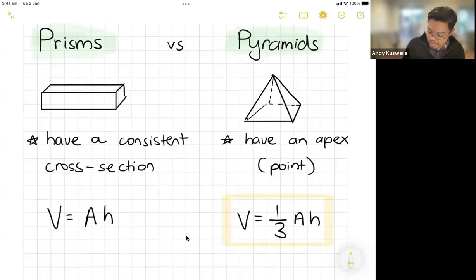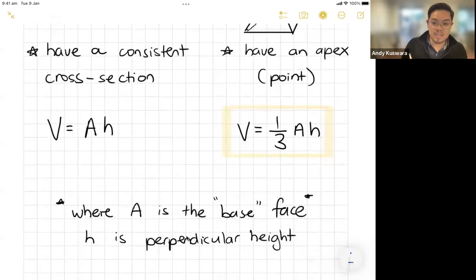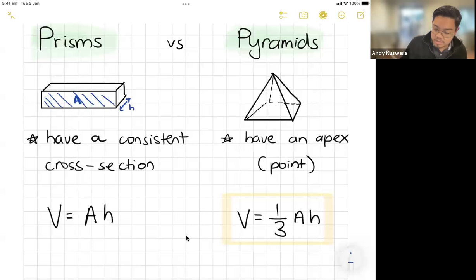The important thing to note here is that A is your base face and h is your perpendicular height from that base face. If I talked about that as my A, that would be my h there, whereas here that bottom face there would be my A, and my perpendicular height would be that length from there to there.